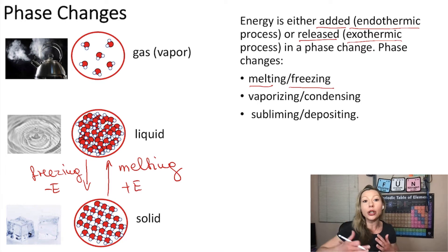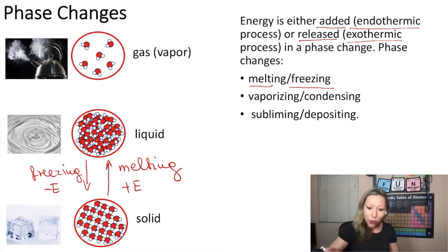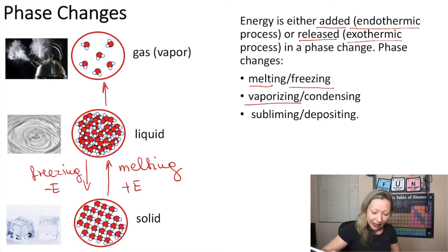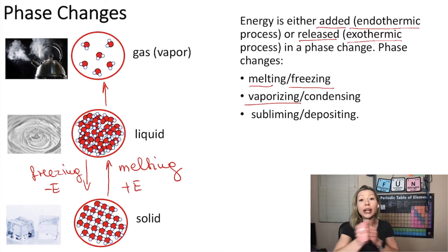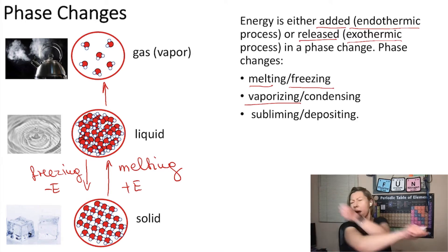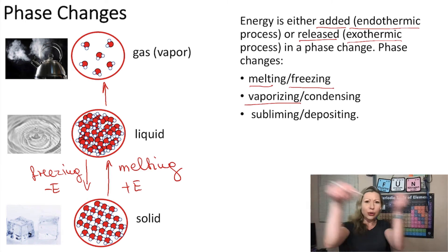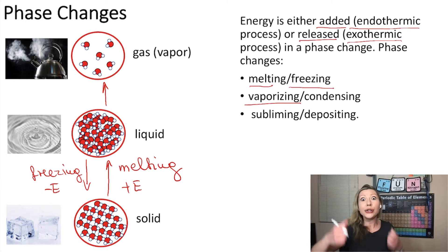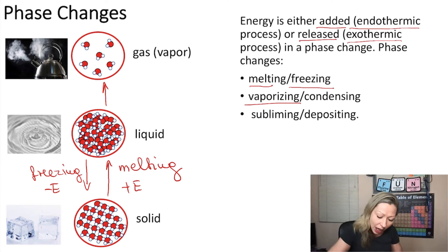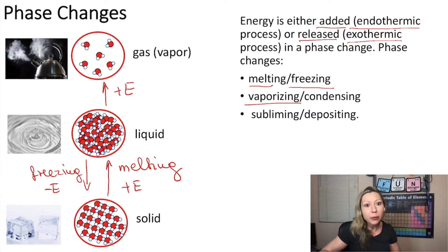When we go from a liquid to a gaseous state, we are going to have vaporization. In liquid, molecules are passing each other, but in the gas phase, molecules are just zooming around. So we need to add energy to get to the gaseous phase. Vaporization is going to be an endothermic process.